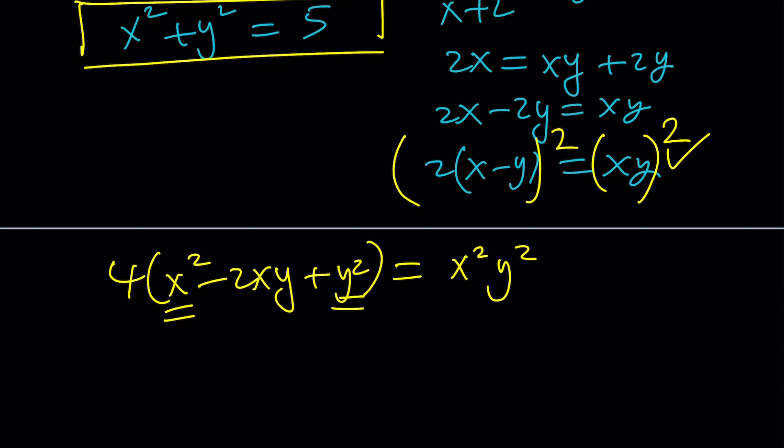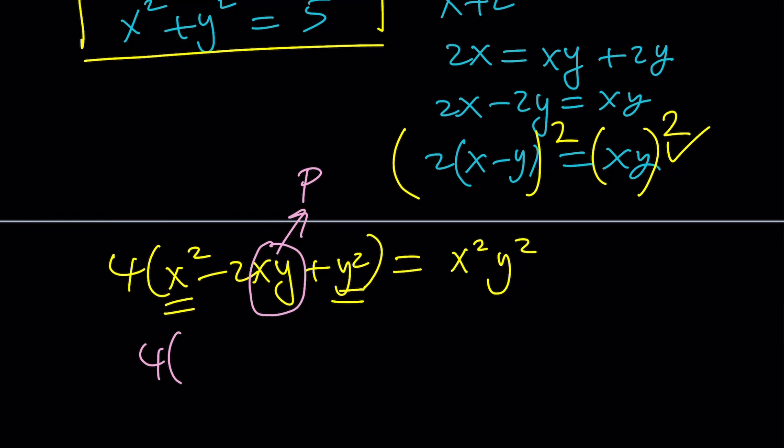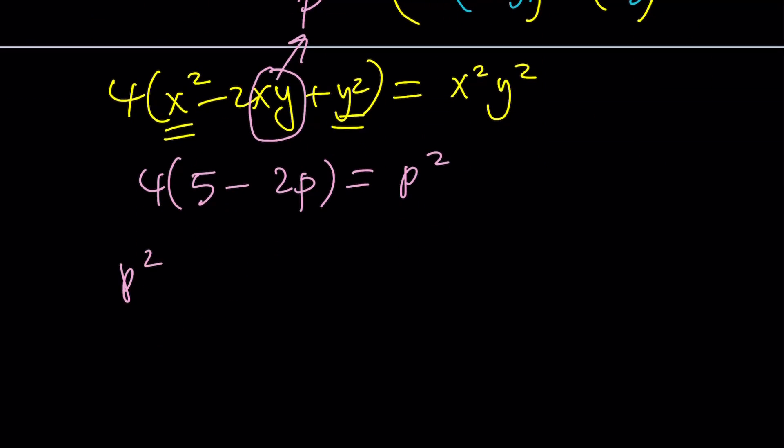Now, notice that x² + y² = 5, and if you call this product p, which is appropriate, right? Now, you're going to get the following: 4·5 minus... that's a 2, right? 5 - 2p... equals p². And again, this is a quadratic, but this time it's a little different because we're solving for the product, not the numbers themselves.